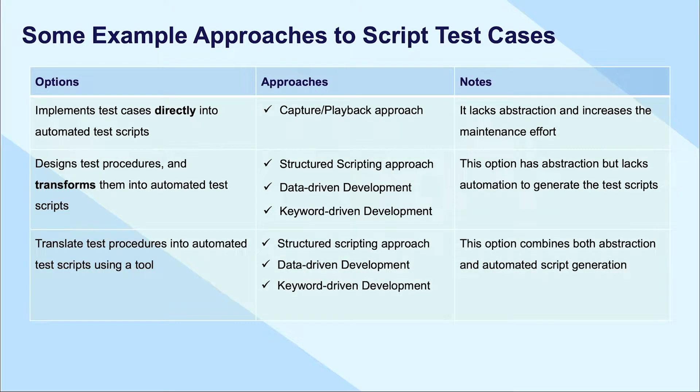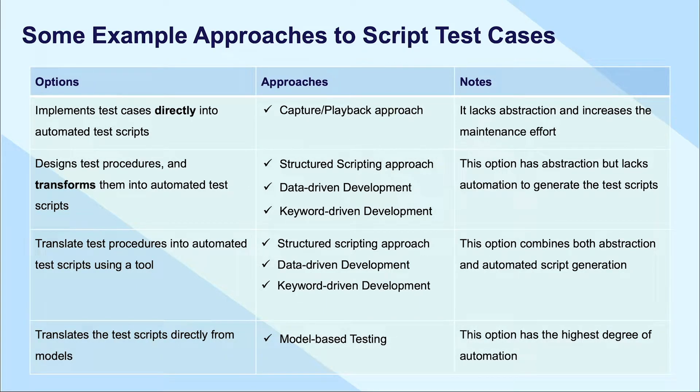The test automation environment uses tools to translate test procedures into automated test scripts. This option combines both abstraction and automated script generation. The test automation environment uses tools that generate automated test procedures and/or translate the test script directly from models. This option has the highest degree of automation.